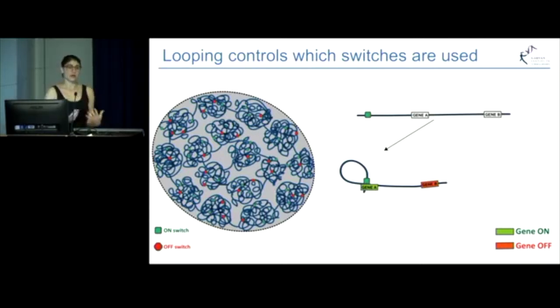There's a variety of structures that can arise from the same DNA. Here we have another structure that could occur where the on switch completely skips over gene A and instead turns on gene B.